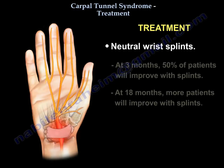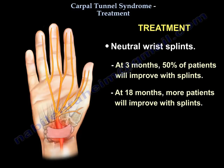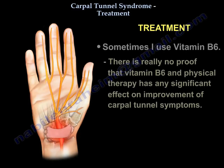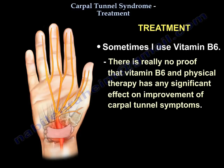At 3 months, 50% of the patients will improve with splints. At 18 months, more patients will improve with splints. Sometimes vitamin B6 is used, but there is really no proof that vitamin B6 and physiotherapy has any significant effect on improvement of Carpal Tunnel symptoms.